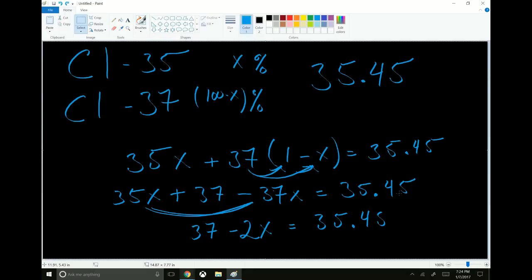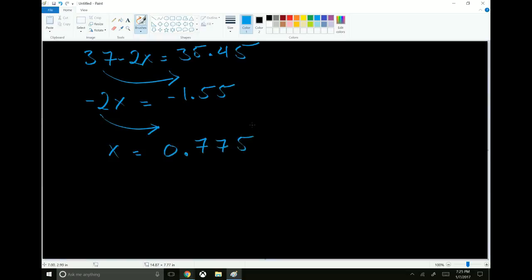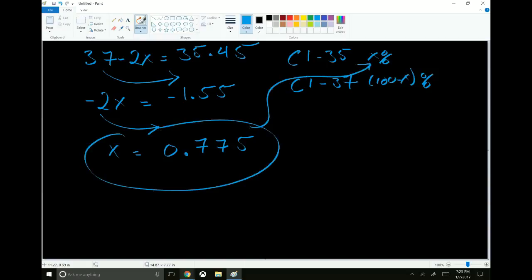So let me go ahead and clear off my chalkboard here. We write that last one, 3700 minus 2x equals 3545. Alright, now we're just going to go ahead and subtract 3700 from both sides. Negative 2x equals negative 155. Now we divide both sides by negative 2. x equals 77.5. Now, what was x? Well, we had chlorine 35, chlorine 37, x percent, 100 minus x percent. Okay. So this tells us the abundance of chlorine 35.